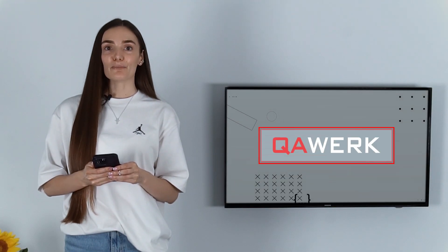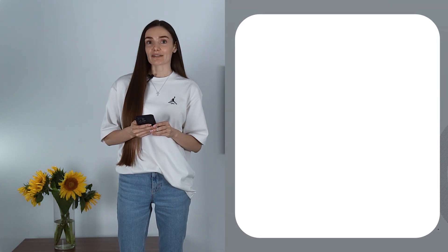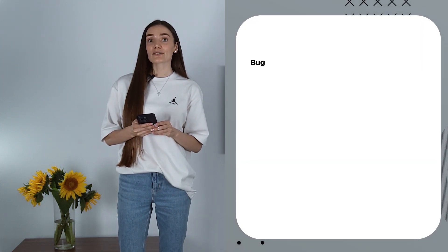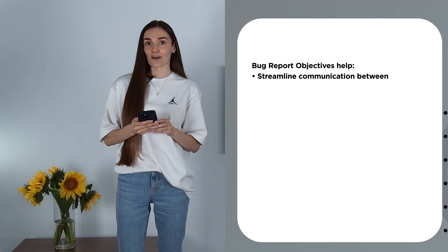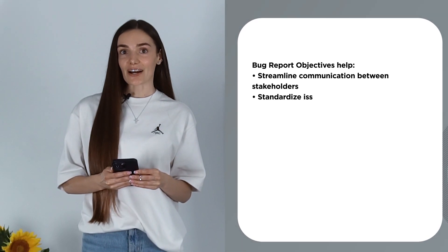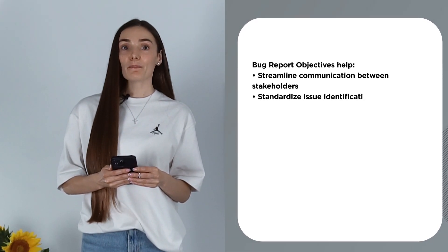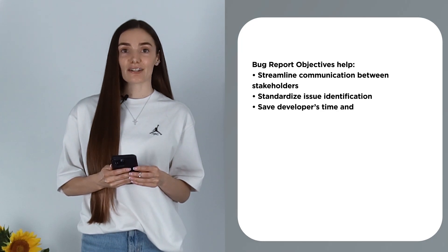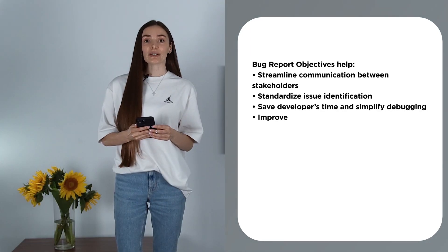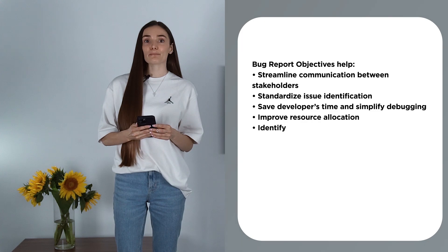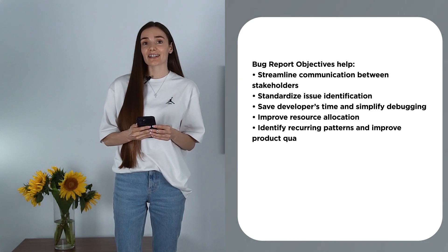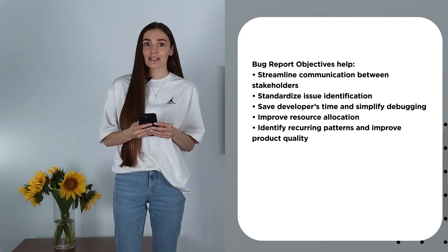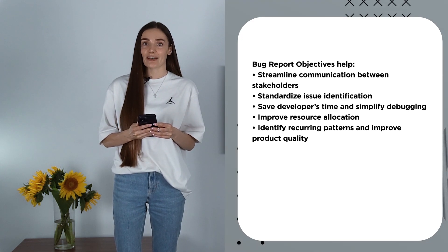First, let's talk about bug report objectives. A bug report is a technical document that serves as a means of communication between testers, developers, and other project stakeholders. It helps standardize the way bugs are identified and reported. When everyone is following a standard, less time is spent on back-and-forth communication and everyone understands what needs to be fixed and how urgent the issue is.